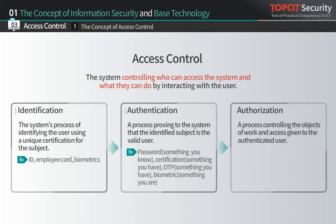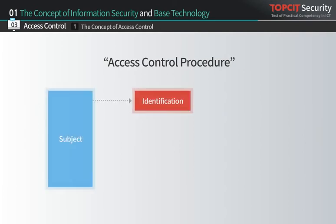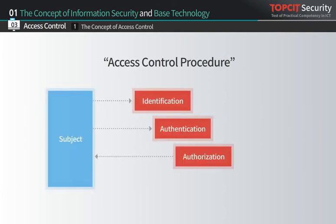Authorization is a process where the system controls the authenticated user's access to objects and determines what they can do. Examples include mandatory access control, discretionary access control, and role-based access control. The access control procedure occurs in the sequence of identification, authentication, and authorization, then providing the rights to access the objects, and finally allowing the system to access the objects.